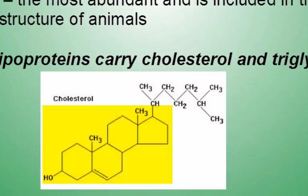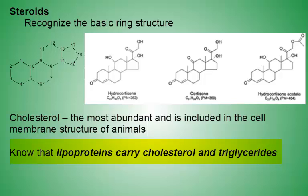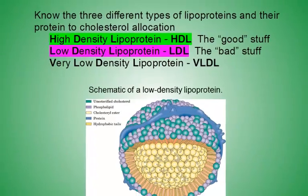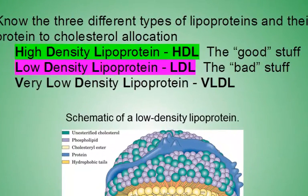Cholesterol is an example of a steroid and is the most abundant. Lipoproteins carry cholesterol and triglycerides. Lipoproteins are very large structures containing a variety of large molecules. There are three types of lipoproteins: high density, low density, and very low density. You may be familiar with the first two as HDL and LDL. HDL and LDL are included in a typical blood panel as a measure of how much cholesterol is in the body.